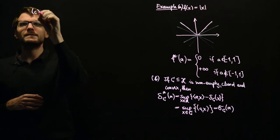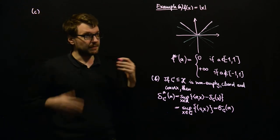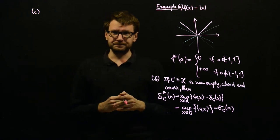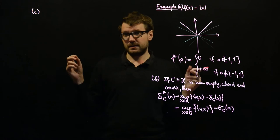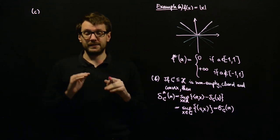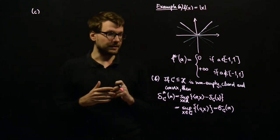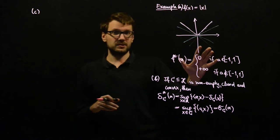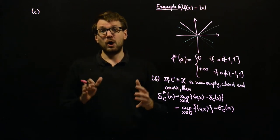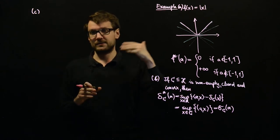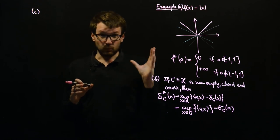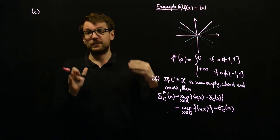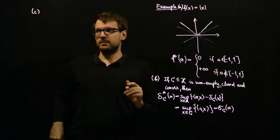Now let's see what happens if we take a sublinear function — for example the absolute value, or a norm. It turns out that the conjugate of a sublinear function will always be an indicator function of some set. In fact, the conjugate of any norm on H will be the indicator function of the unit ball of the dual norm. For example, the conjugate of the l1 norm is the indicator function of the unit ball of the l∞ norm, just as a side note.